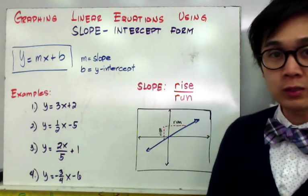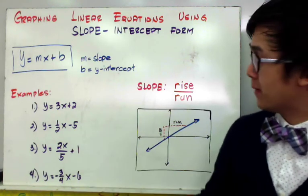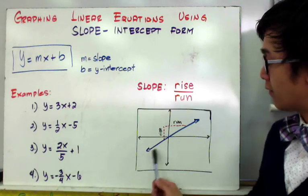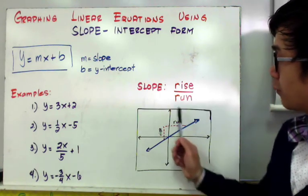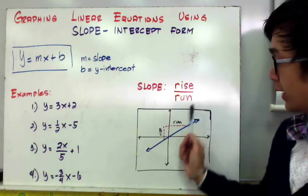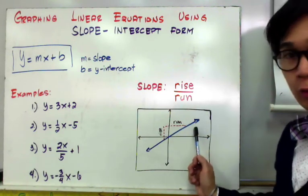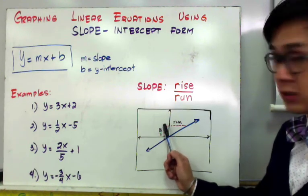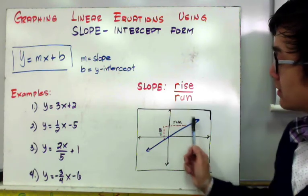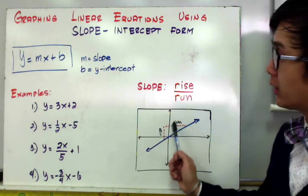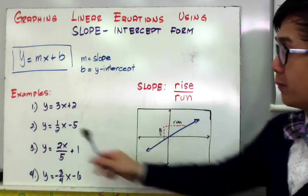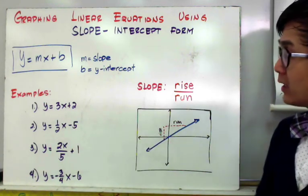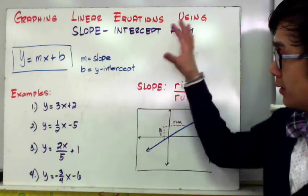For today, we're going to learn how to graph linear equations of this form. This is one example of a linear equation and its graph, with slope given by rise over run. If you notice, we have a unit going up and a unit going to the right. By just looking at the slope and the y-intercept, we'll be able to graph the linear equation.